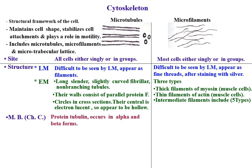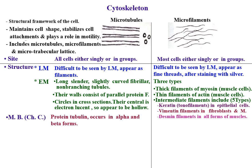The five types of intermediate filaments are: keratin (tonofilaments), present in epithelial cells, associated with desmosomes and cell attachments; vimentin filaments, present in fibroblasts and mesenchymal cells in connective tissue; desmin filaments, in all forms of muscle, forming a framework linking myofibers and providing mechanical integration; neurofilaments, in nerve cells, providing support for long processes; and glial filaments, in glial cells of the central nervous system, supporting their respective cell types.